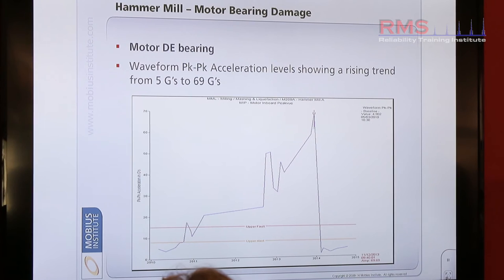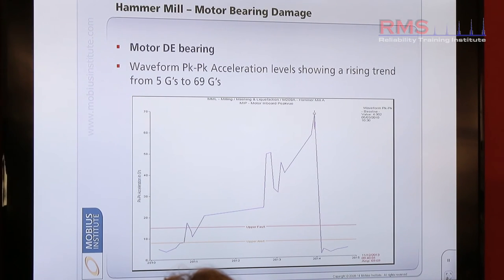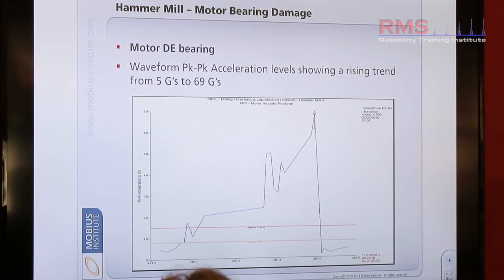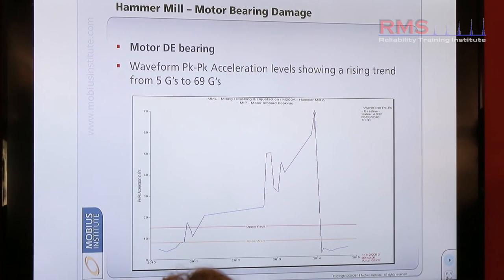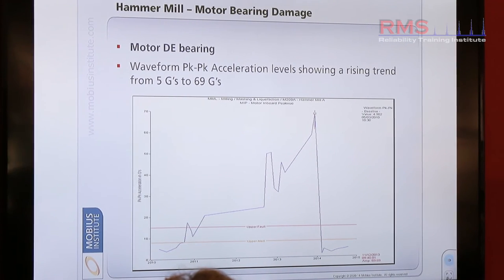Monthly vibration measurements were collected when the plant first started up in 2010, and continue to monitor this machine up to present day on a monthly basis. This trend is actually a trend of the shock within the machine — the impact force, the shocks that might be produced from a bad bearing. This is the trend of the shocks.